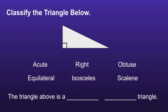Let's try another example. If we look at the angles in this triangle, we can see something in the bottom left. That little square lets us know that that angle is exactly 90 degrees. That would make this triangle a right triangle.